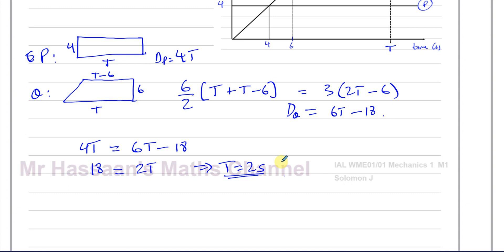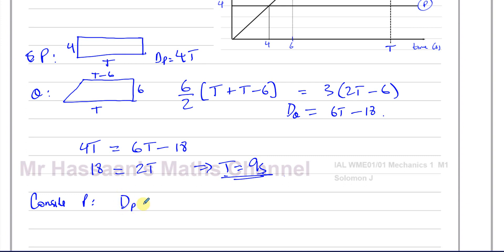So after 9 seconds, they will have traveled the same distance. What is that distance? Using P: distance = 4 × 9 = 36 centimetres. Checking with Q: 6×9 minus 18 = 54 minus 18 = 36. So after 9 seconds, they would both have traveled 36 centimetres.